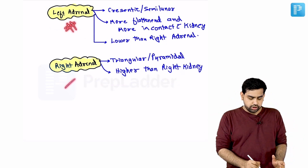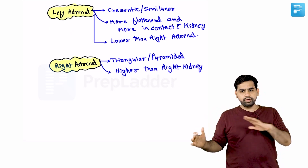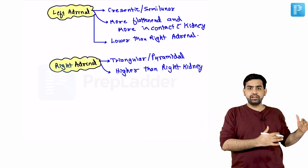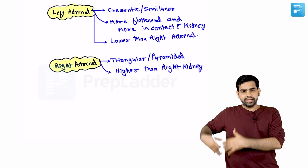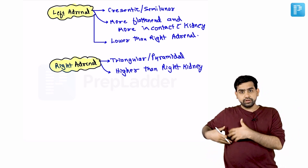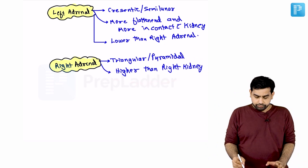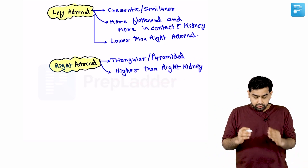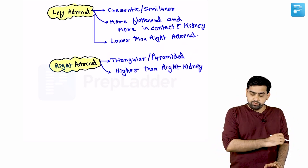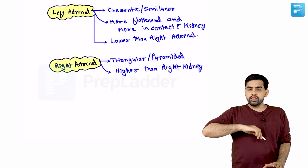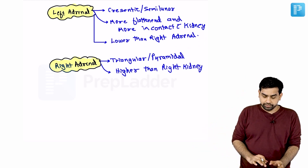Now let's talk about the differences between the left and right adrenal glands. Unlike the kidney where the right kidney is located at a lower position, with the adrenal glands it is the left adrenal which is situated at a lower position. The liver pushes the right kidney down, but the right adrenal gland is actually located at a higher position. Regarding shape: on the right side the adrenal gland is triangular or pyramidal, and on the left side it is crescentic or semilunar in shape.